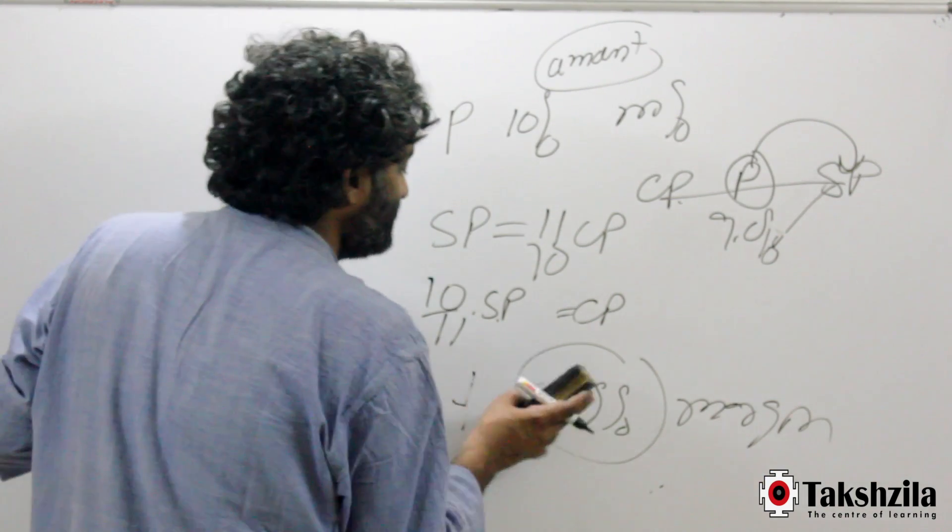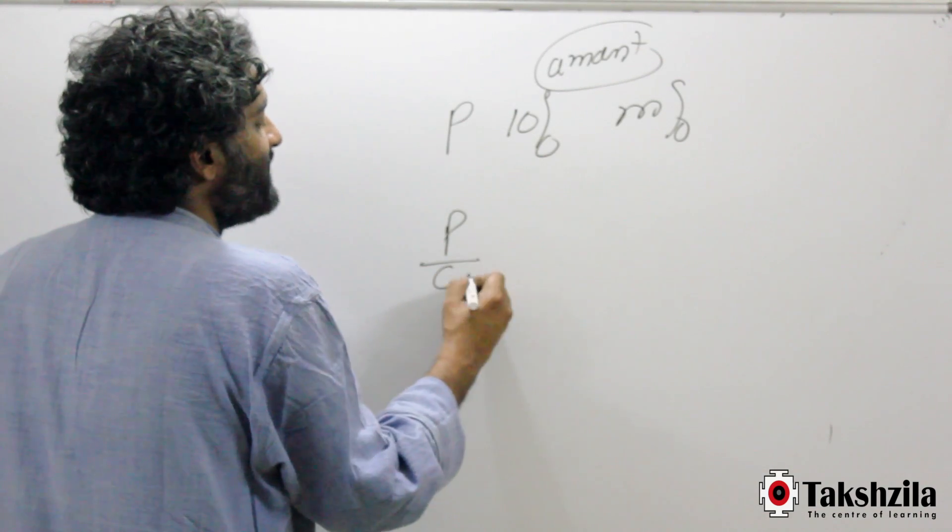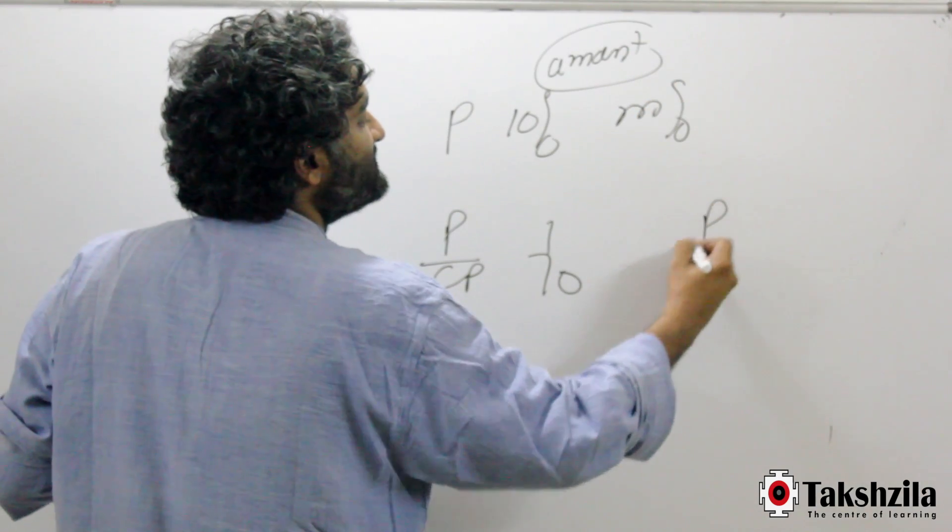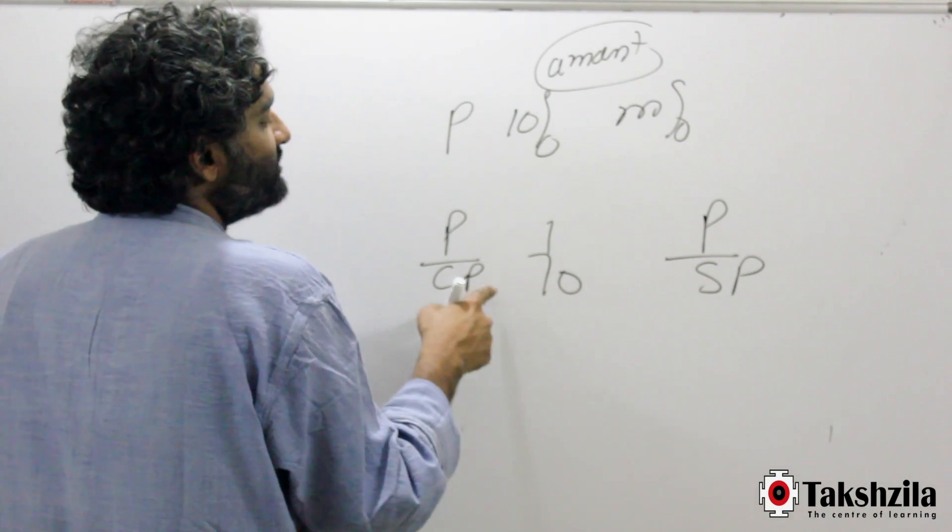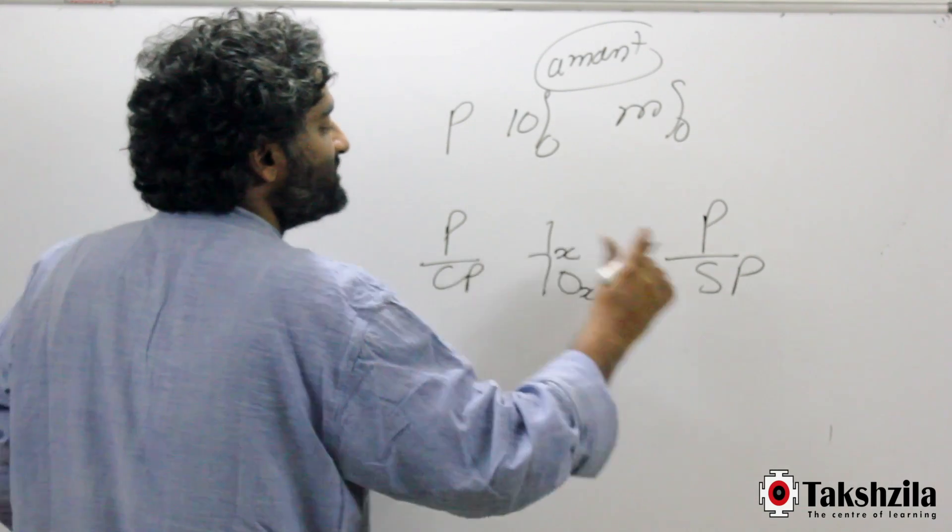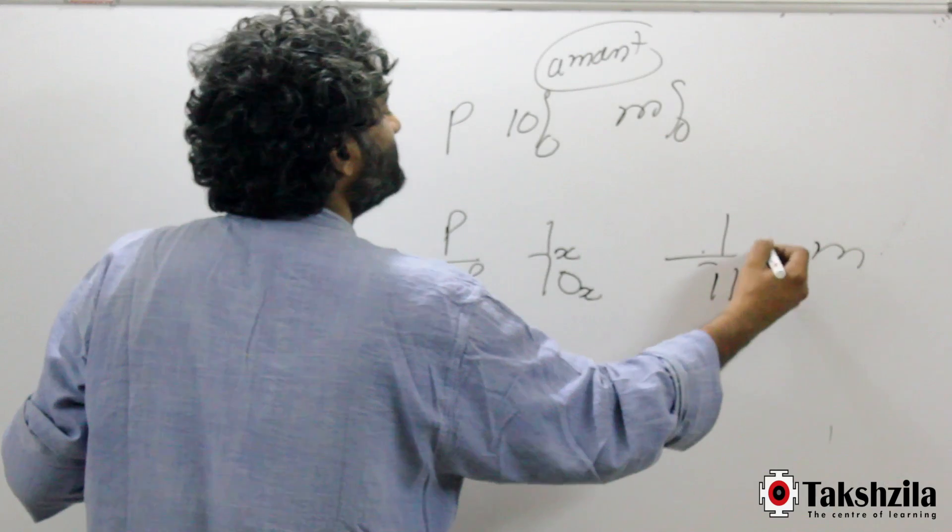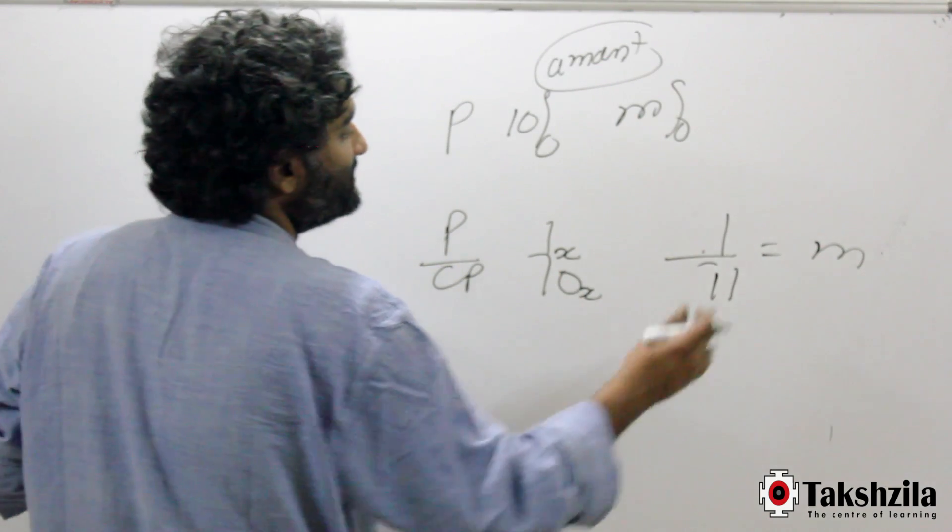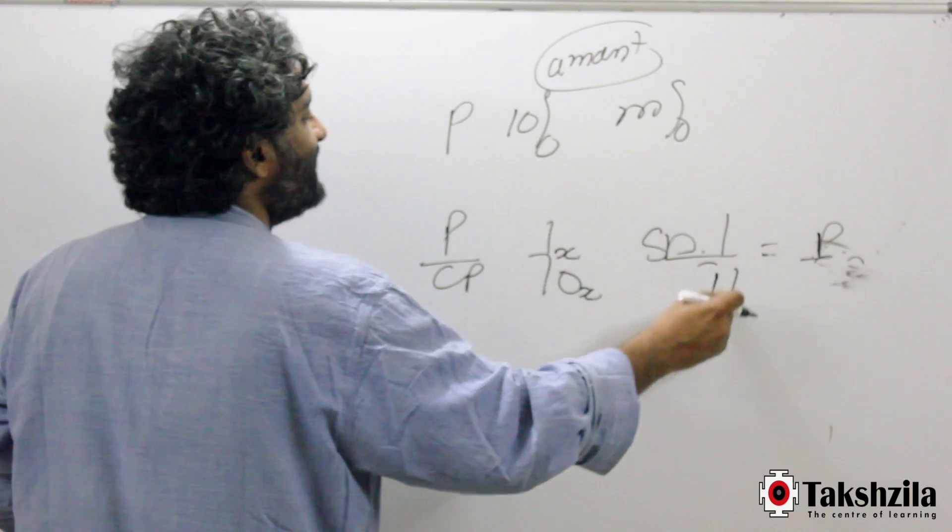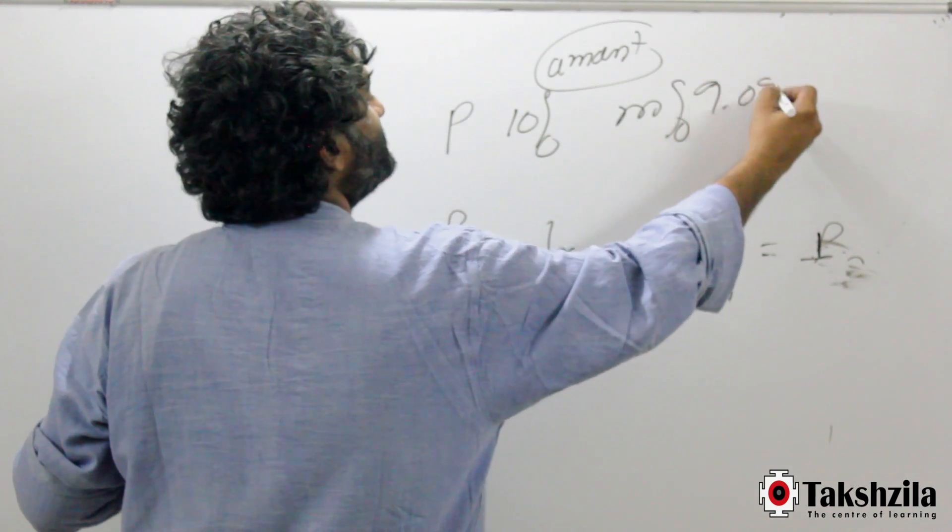We could have done the same thing in another way and we'll practice both the methods. When I say profit is 10%, so I know P by CP is 1 by 10. And when I say margin, what I want is a relationship between P and SP. I know CP is 10X. P is 1X. So selling price would be cost price plus profit. So this would be 11. And I know profit is 1 only. So this would be 1 by 11. So margin is 1 by 11 or 9.09%. Or you could have done this also. Profit by selling price is 1 by 11. Selling price comes here. Profit is 1 by 11 of selling price. Or profit is 9.09% of selling price. Therefore, the margin percent is 9.09%.